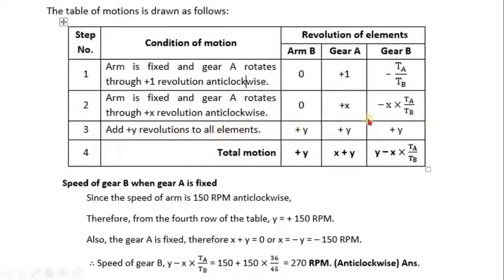So we add y revolutions to all the elements, +y, +y, +y. So total becomes +y, then x + y, then y - x × TA/TB.